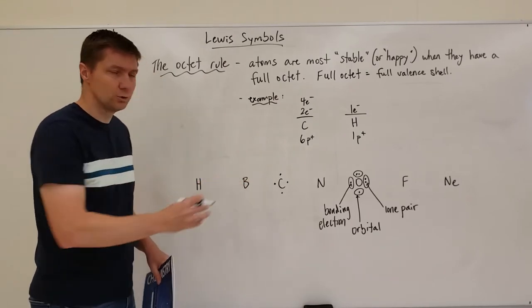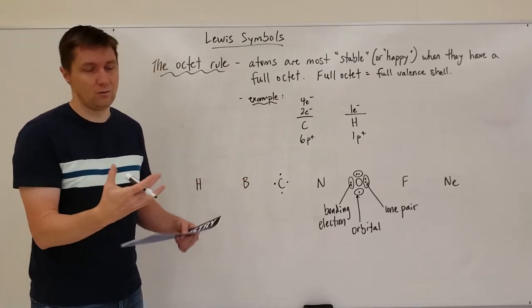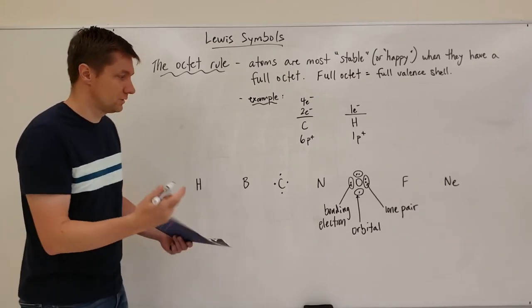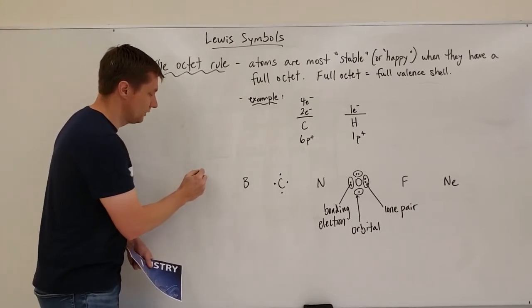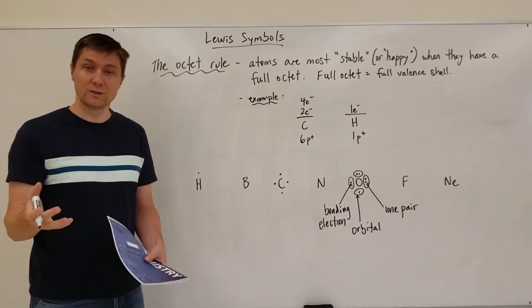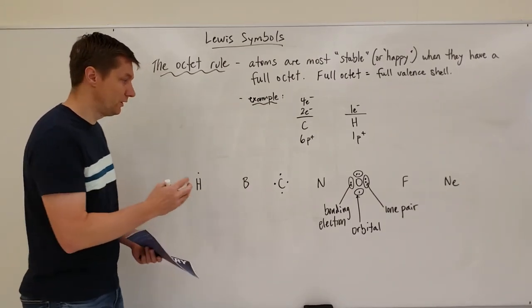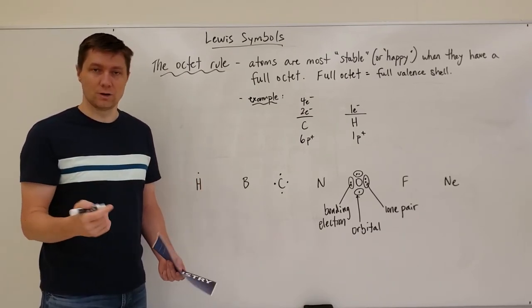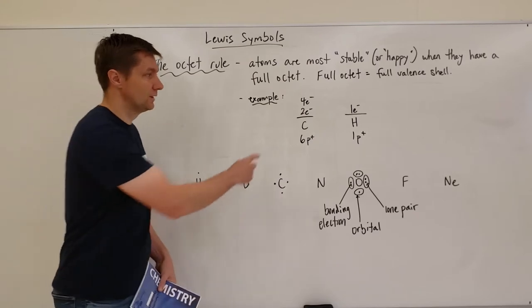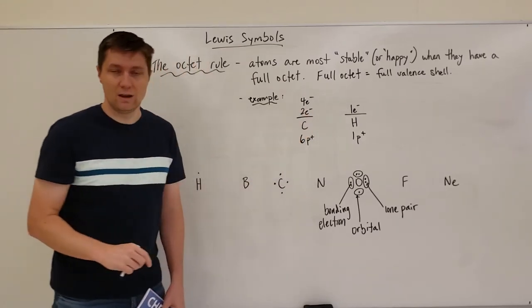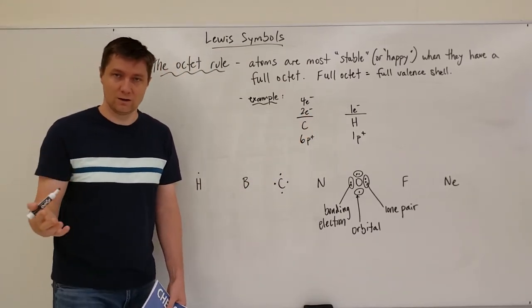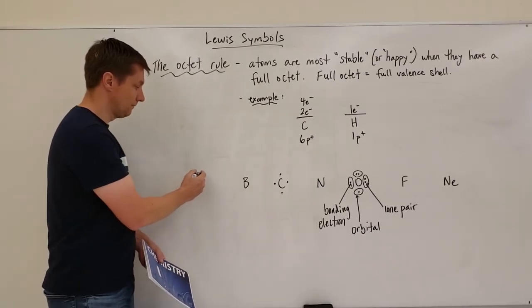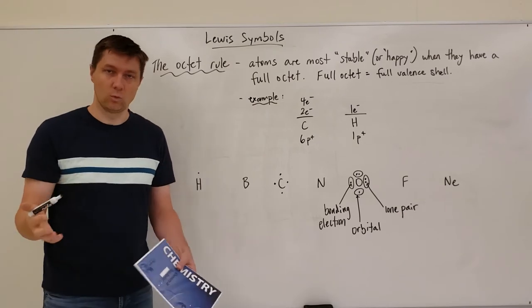When we're drawing Lewis symbols, all we're drawing are the valence electrons — those are the ones available for bonding on the very outside. Hydrogen's electrons are all valence electrons, which is a unique thing about it. When we draw Lewis symbols, we fill each orbital first with one electron. For hydrogen, because its first energy level is its valence energy level, it only has one orbital, so we can only put electrons in that one orbital.